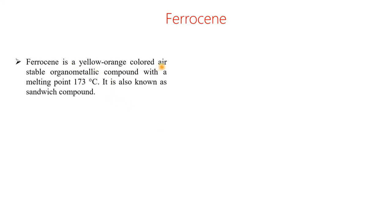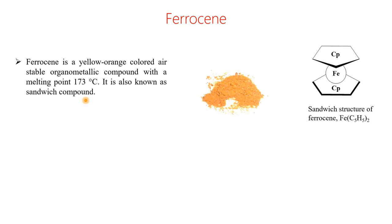Ferrocene is a yellow-orange colored, air-stable organometallic compound with a melting point of 173 degrees centigrade. It is a remarkably stable compound, also known as a sandwich compound. This is the physical appearance of the compound — it is yellow-orange. You can see in this structure there is one CP ring above and another CP ring below, with iron sandwiched between the two CP rings. This structure very closely resembles a sandwich, which is why these types of compounds are known as sandwich compounds.